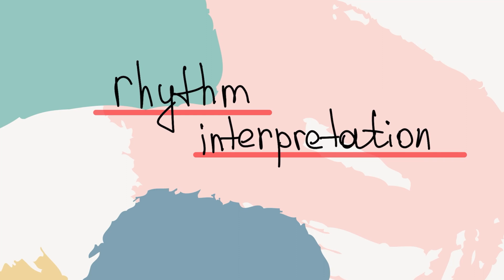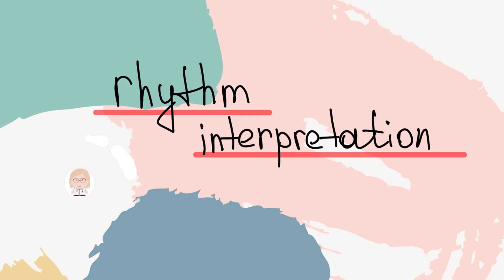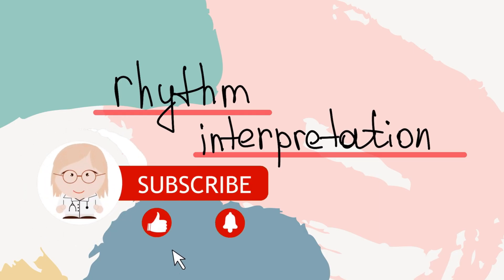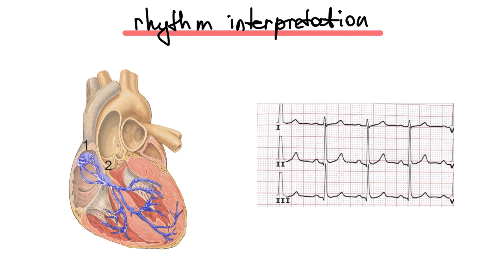Hi! Today we will talk about rhythm interpretation, about normal sinus rhythm. Subscribe to my channel for more videos. The sinoatrial node is the main pacemaker, so in a normal ECG we can see sinus rhythm.